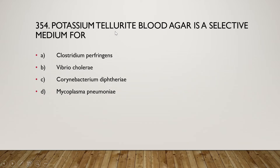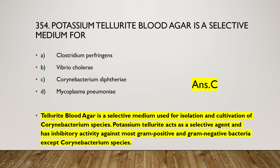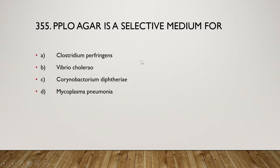Next: potassium tellurite blood agar is a selective medium for which organism? The right answer is option C, Corynebacterium diphtheriae. Tellurite blood agar is a selective medium used for isolation and cultivation of Corynebacterium species. Potassium tellurite acts as a selective agent with inhibitory activity against most gram-positive and gram-negative bacteria except Corynebacterium species.